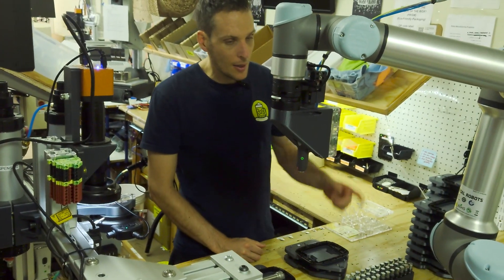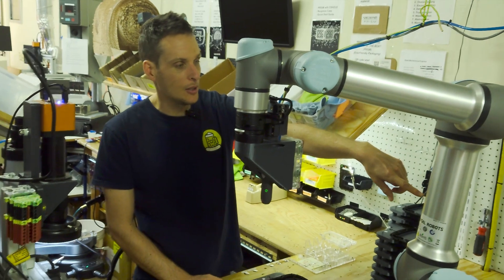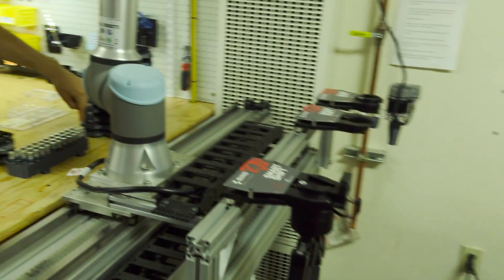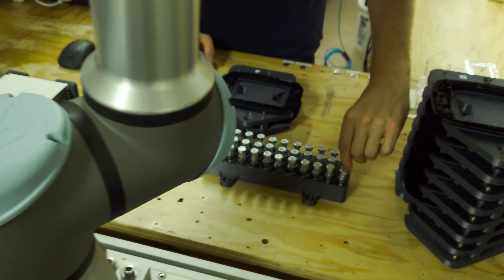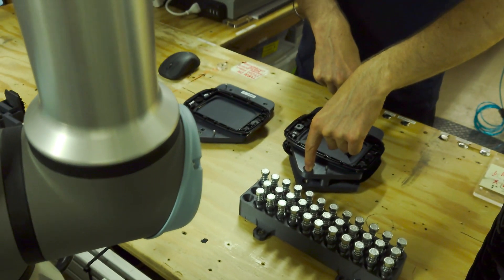And then the robot's going to go to the tool changer, pick up a screwdriver, and then pick up some of these bolts here, drop them in these holes in the fixture.